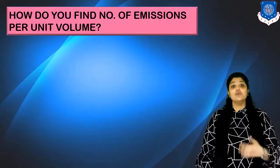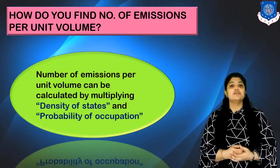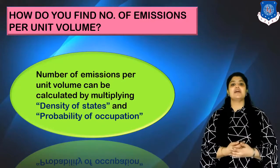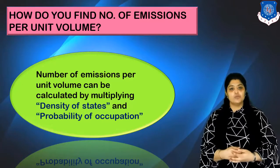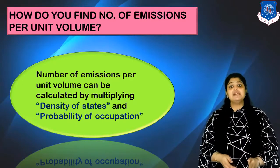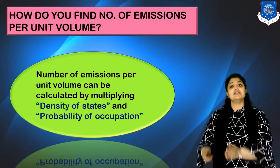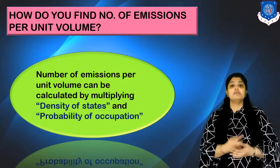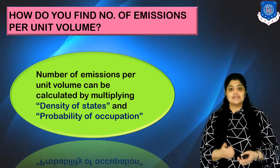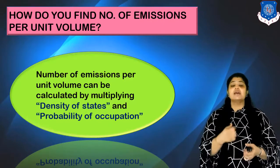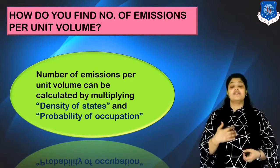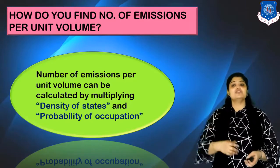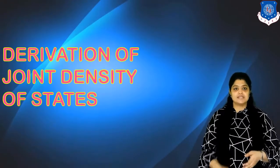How do we find the number of emissions per unit volume? The number of emissions per unit volume can be calculated by multiplying the density of states — denoted Z(E) — and the probability function (probability of occupation), denoted F(E). We can define the DOS in the form of conduction and valence bands, and with this we start the derivation of joint density of states.